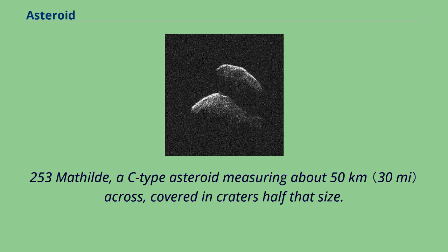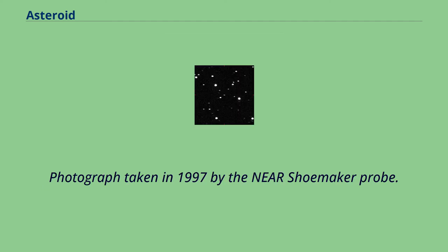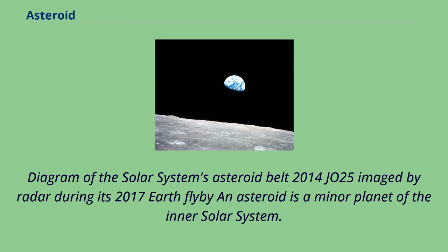253 Matilda, a C-type asteroid measuring about 50 kilometers across, covered in craters half that size. Photograph taken in 1997 by the NEAR Shoemaker probe. 2014 JO25 imaged by radar during its 2017 Earth flyby. An asteroid is a minor planet of the inner solar system.